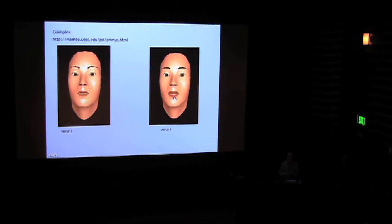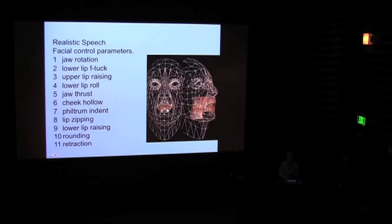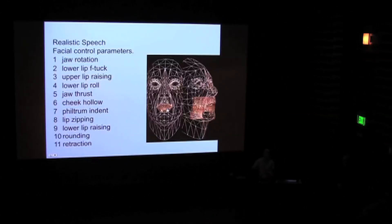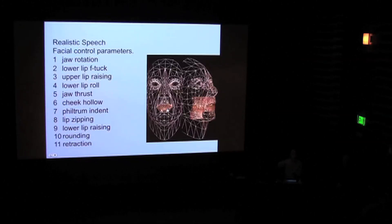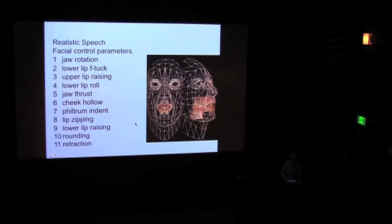So, you can think of Baldy as a puppet on a set of strings. And moment by moment, we're moving these strings to create the accurate speech. And we use so-called FAPS, facial control parameters, such as jaw rotation, lip zipping, retraction, jaw lowering, and so on.